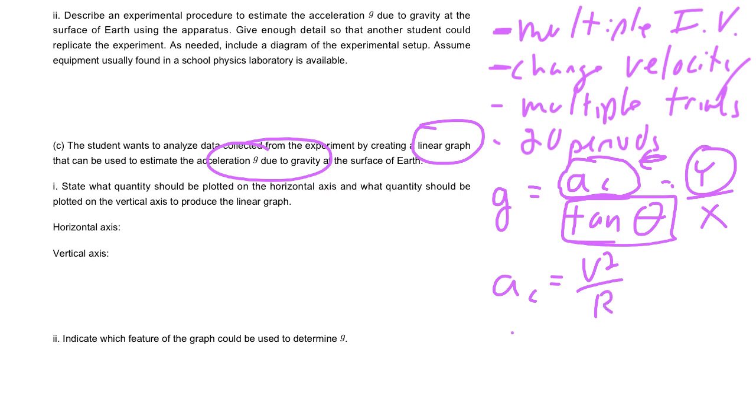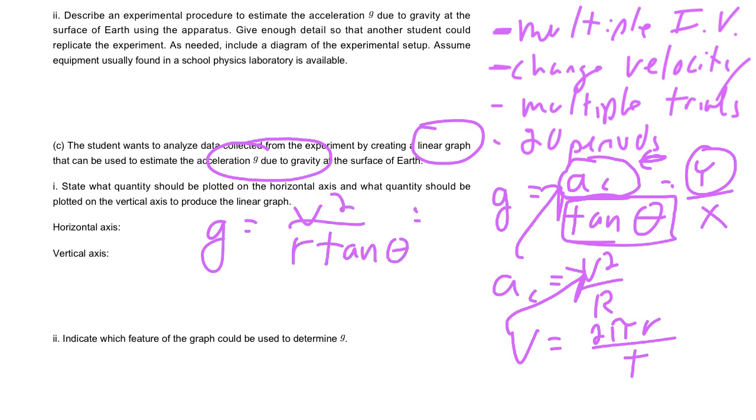You describe how to find V - V is 2 pi r over t. If you describe how to get it, then you could graph those two. If you want to make a substitution and break it down even further, we could do that as well. We could say g equals V squared over r tan theta. You could probably say this is your y-axis, this is your x-axis - V squared and r tan theta.